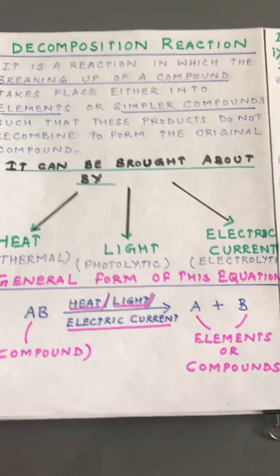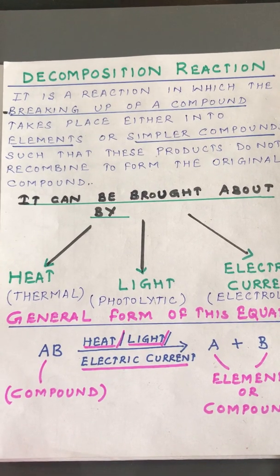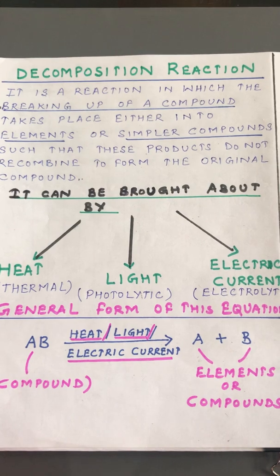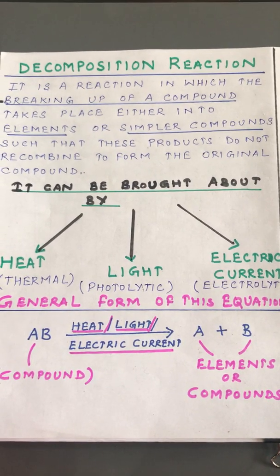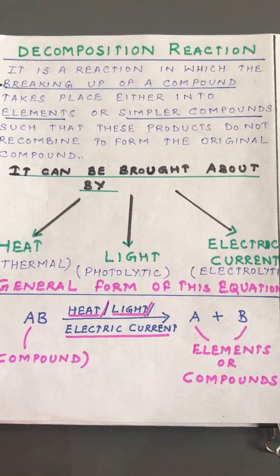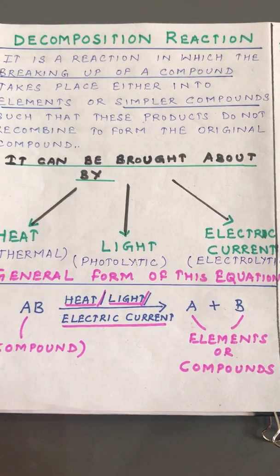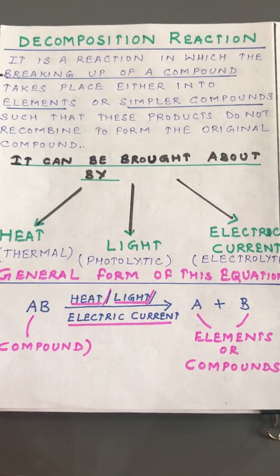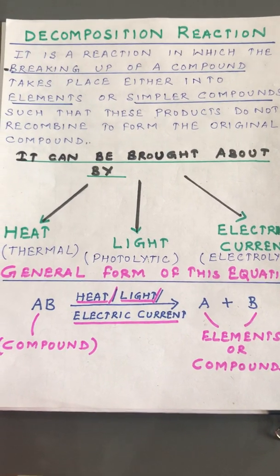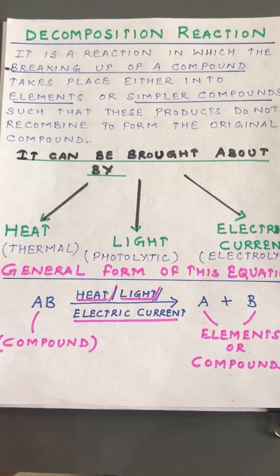Now let us discuss what is meant by a decomposition reaction. It is a reaction in which breaking up of a compound takes place, either into elements or simpler compounds, such that the products do not recombine to form the original compound. Decomposition reactions are always the reverse of combination reactions. In a combination reaction, elements or compounds combine together to form a single product. In a decomposition reaction, one compound breaks or splits up into simpler substances.